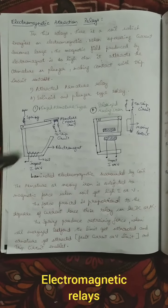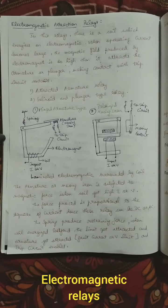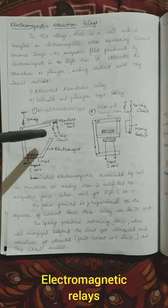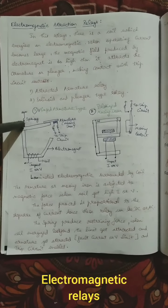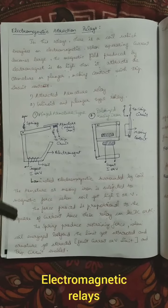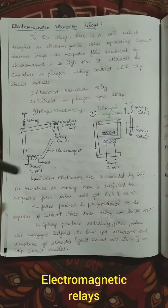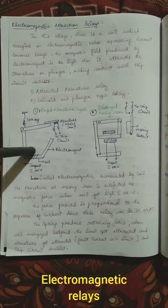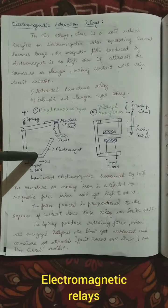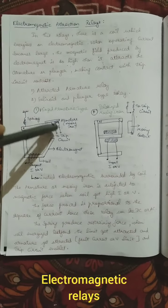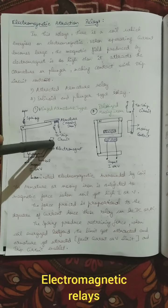The moving force must be greater than the restraining force of the spring. Normally the spring is in a reset — free — condition. The fault current initiates a magnetic force, and that force attracts the armature, automatically connecting the circuit so the tripping circuit gets initiated.